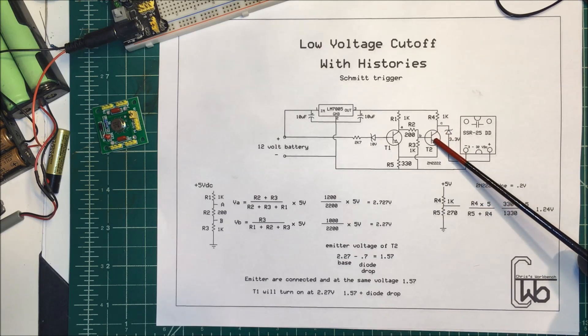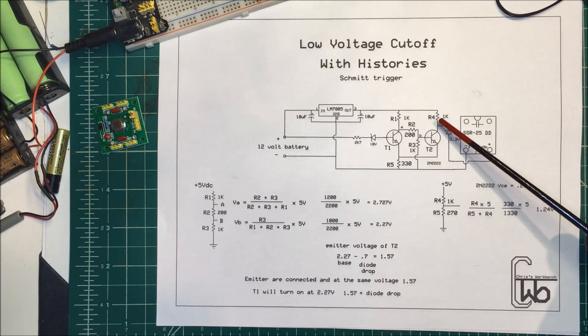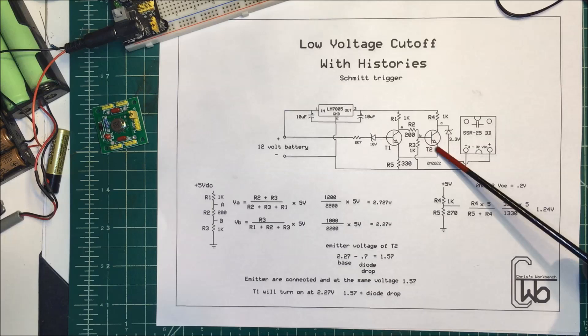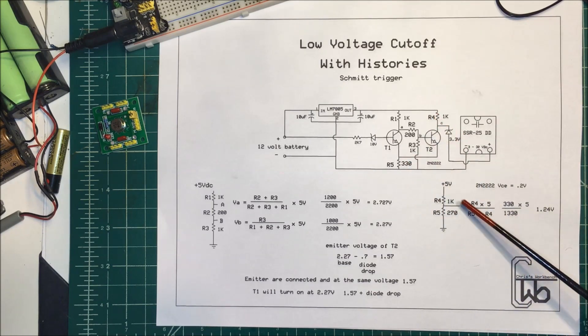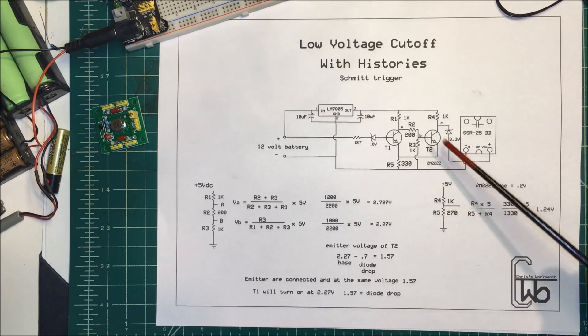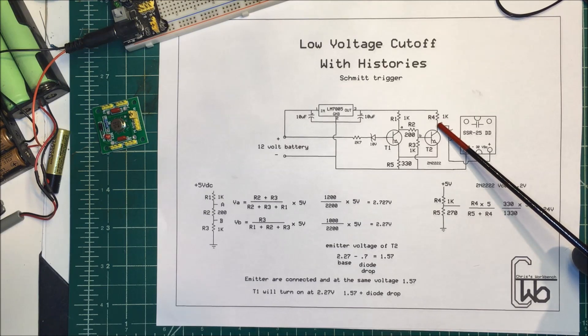But at this point here now with this transistor turned on I have a 1k resistor and a 330 ohm resistor and that forms a voltage divider and if you do the math on that it comes out to 1.24 volts at this point here.